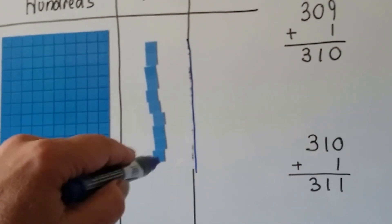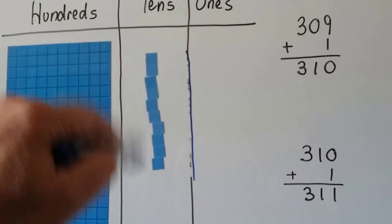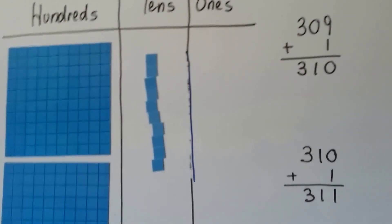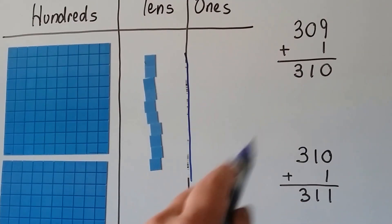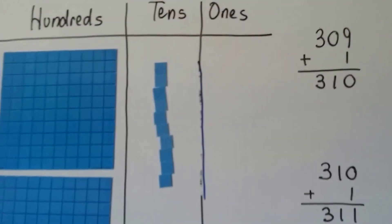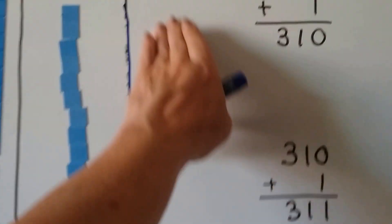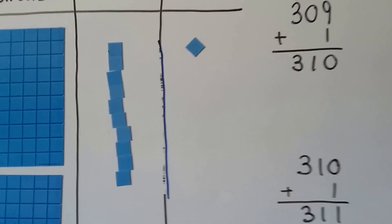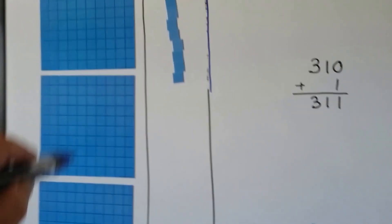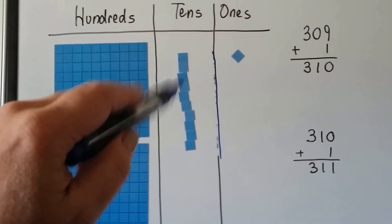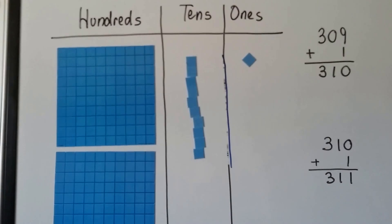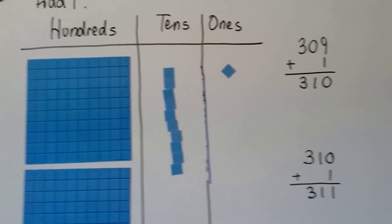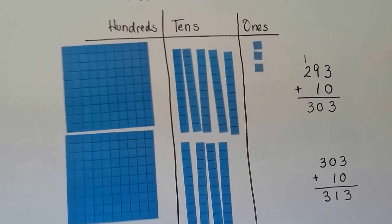Once we get enough ones to make a ten, we move it to the tens place. Now we have 310 with no ones. If I add one more, I've got three hundreds, one ten, and one one — so 311.